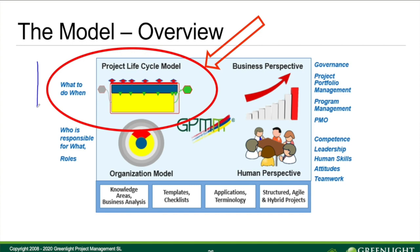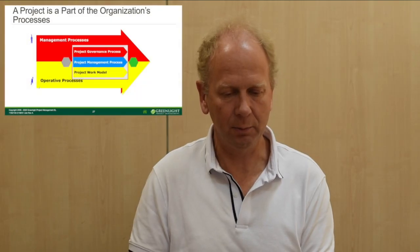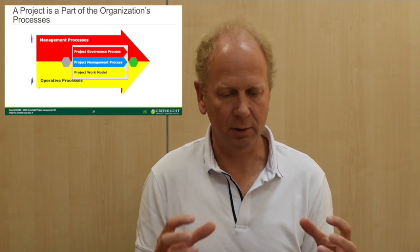Let's have a closer look at the project lifecycle model. This one decides what to do and when we are to do something. The project lifecycle actually forms part of the organization's complete process. All organizations have management processes and they also have operative processes. The management process is about business and we represent them with a red color. The operative part is represented by the yellow color.